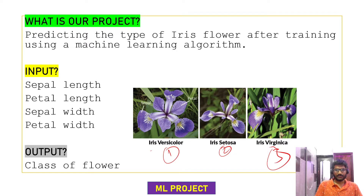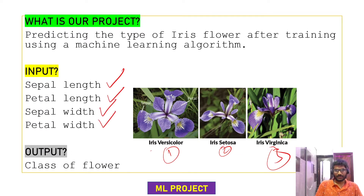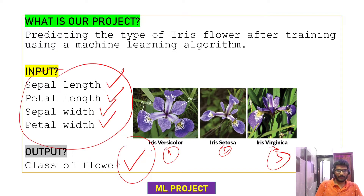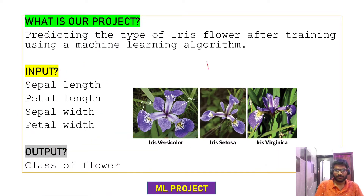Versicolor, Setosa, and Virginica are the three types of flowers. For our machine learning system, we are going to feed the system with inputs: sepal length, petal length, sepal width, and petal width of the flowers. We have these three flowers and four input variables. The output will be the class of the flower — whether these four measurements belong to Versicolor, Setosa, or Virginica.